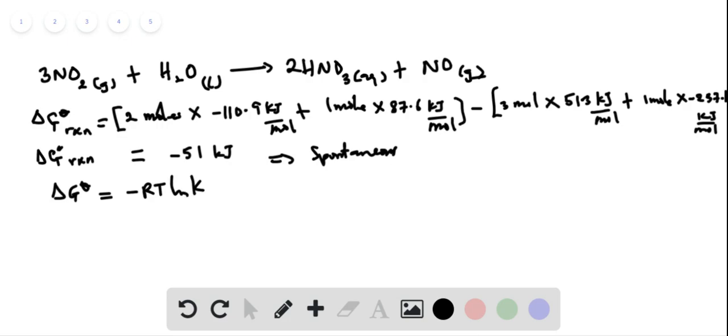Because we don't have gases, Kp would be the exponential of negative delta G standard over RT. So Kp would be equal to exponential of minus delta G, which we found is minus 51 kJ, divided by 8.314 times 10 to the minus 3 kJ per Kelvin times the temperature, which is 298 K.